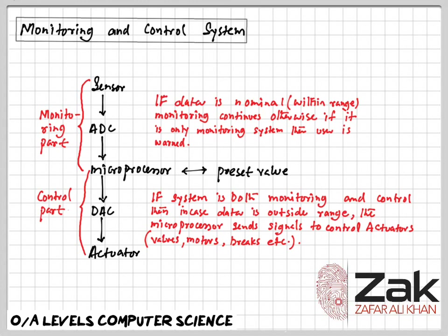If one of the wheels is rotating too quickly, braking pressure is increased to that wheel until it matches the other three. That was just one example of the anti-lock braking system in monitoring and control.